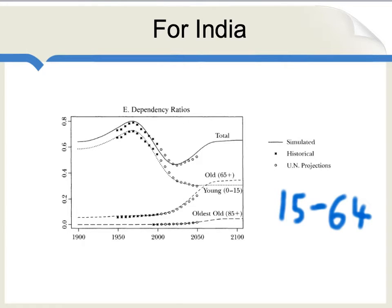This is a slightly more complicated picture. It shows for India what is known as the dependency ratio — the ratio of some group of people, such as the oldest old, relative to individuals in the age brackets 15 to 64. For the oldest old, 85 and above, the projection is that this ratio rises slowly over time and then more rapidly after 2050. For the old in general, age 65 and above, the dependency ratio will be rising more sharply. The dependency ratio for the young — the ratio of the young relative to those in the 15 to 64 age bracket — has been falling and will continue to fall, having peaked around the 1970s.